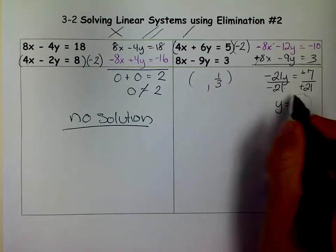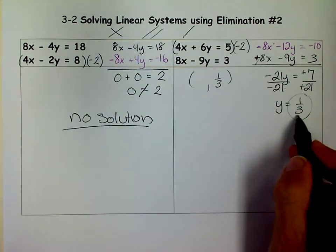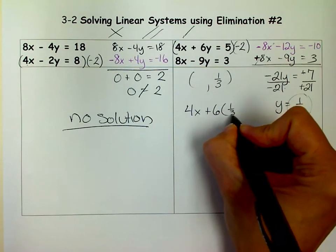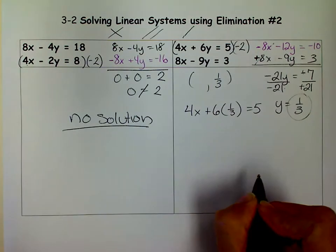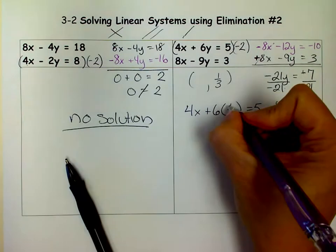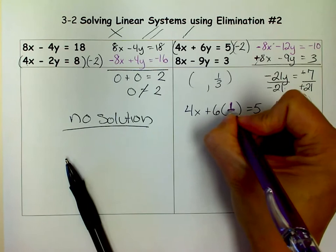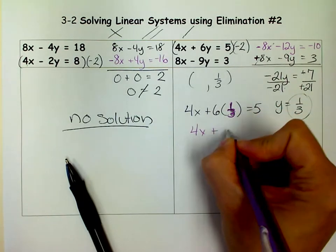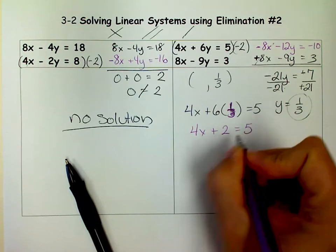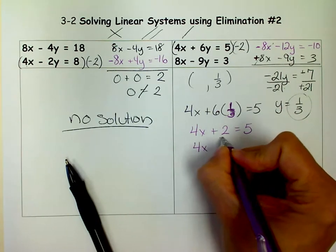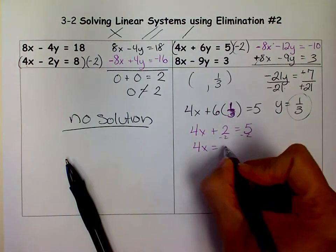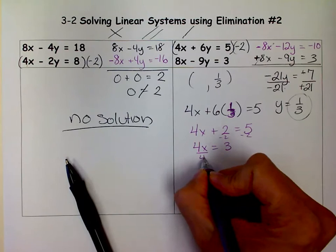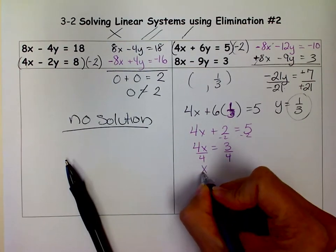So now I'm going to take this y and put it into this first equation. Substitute that in. So 4x plus 6 times 1 third equals 5. So now I have 4x plus, well, 1 third of 6 is 2 equals 5. If I minus 2 from both sides, I get a 3. And if I divide both sides by 4, I get x equals 3 fourths.